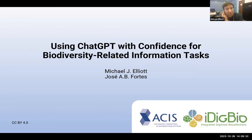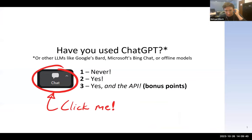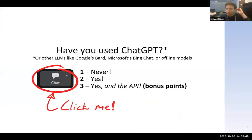The title was 'Using ChatGPT with Confidence for Biodiversity-Related Information Tasks.' ChatGPT is an online service that you can talk to as if you're talking to a human, and it's an example of what's called a large language model — that's what it uses under the hood.